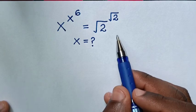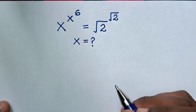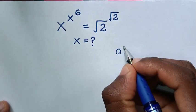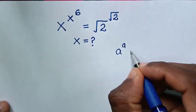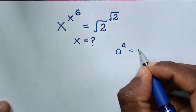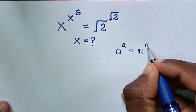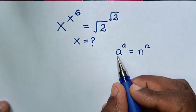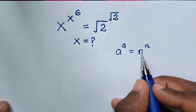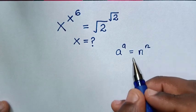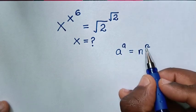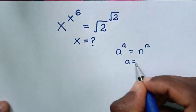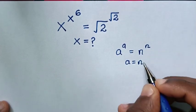So from this exponential equation, we will apply this rule: a power of a is equal to n power of n. So when you compare the bases a is equal to n and the powers a is equal to n, therefore a is equal to n.